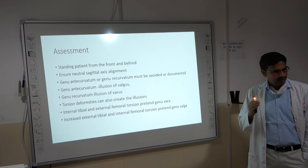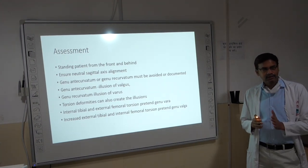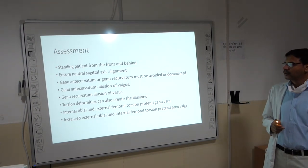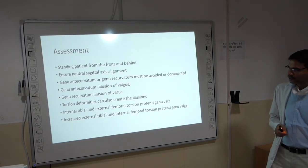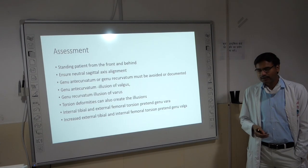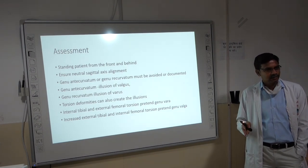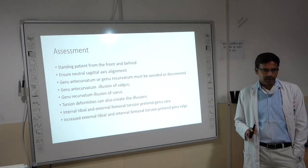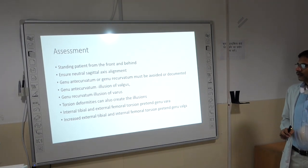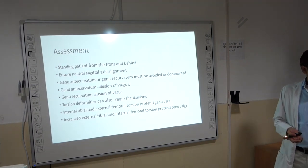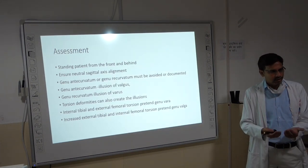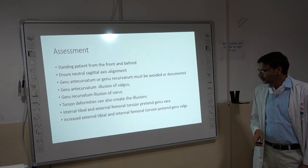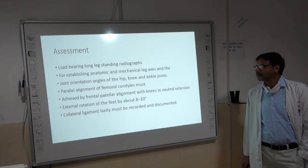Coming to planning of correction: you must rule out any torsional deformity or any anticurvatum or recurvatum. Genu anticurvatum gives an illusion of valgus, while genu recurvatum gives an illusion of varus. Torsional deformities — as already mentioned, internal tibial torsion gives the appearance of genu valgum — should also be ruled out.